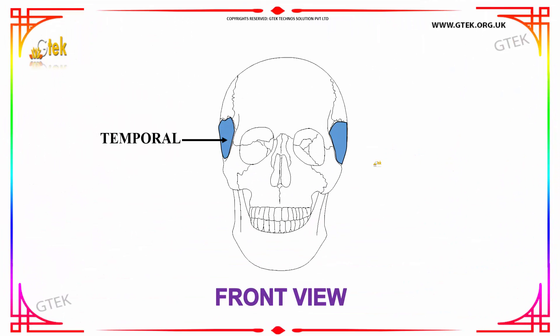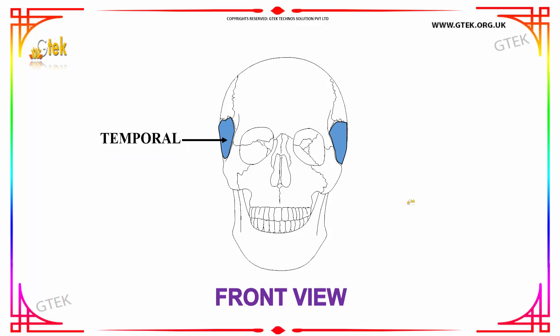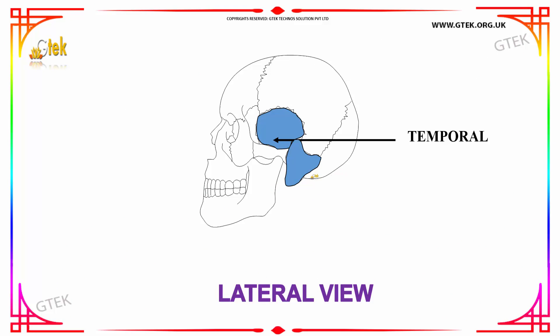Next we have the front view of the temporal bone. Here you are seeing the front view of the temporal bone in the human skull. Next we have the lateral view of the temporal bone in the human skull.